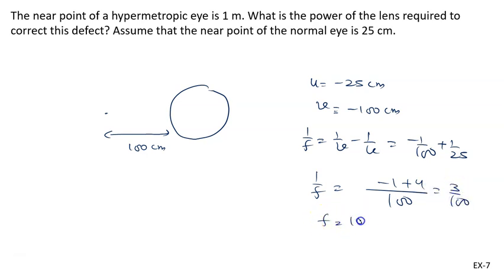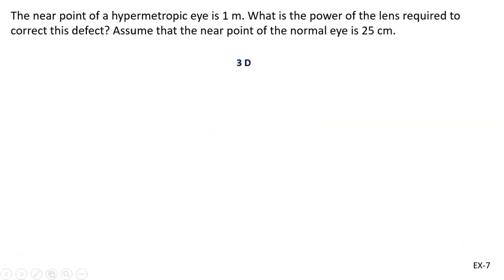And power is given by 100 by f, where focal length is in centimeter. So 100 upon 100 by 3 — 3 will come to the numerator, 100 cancels, and it will be 3 diopter. So the answer of the problem is 3 diopter.